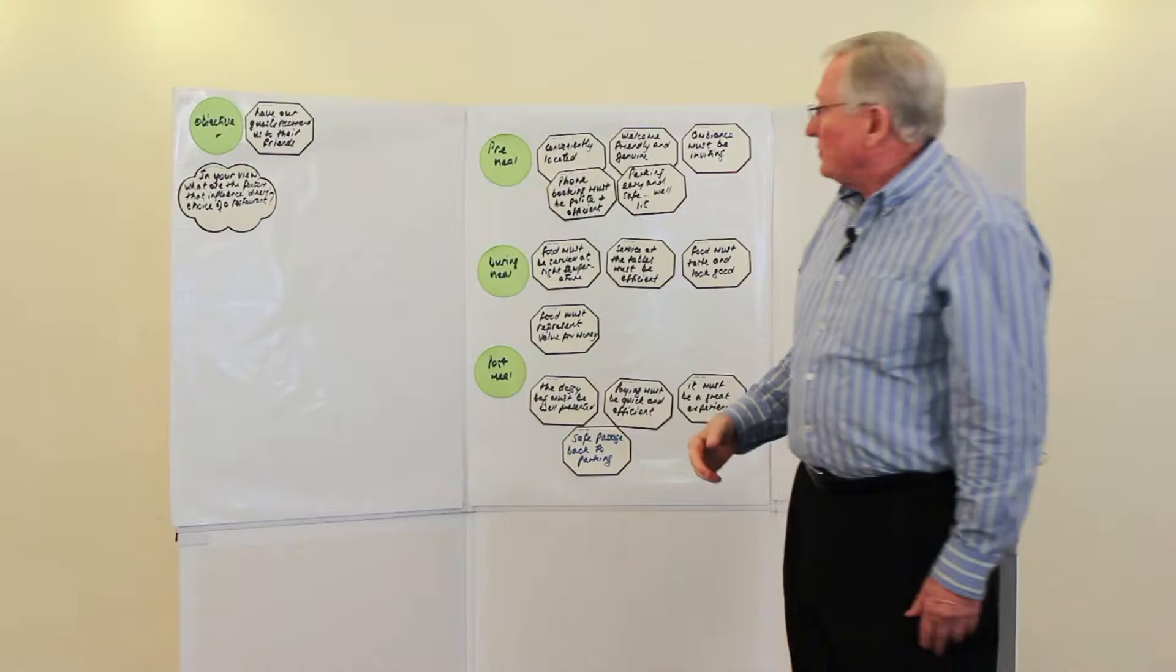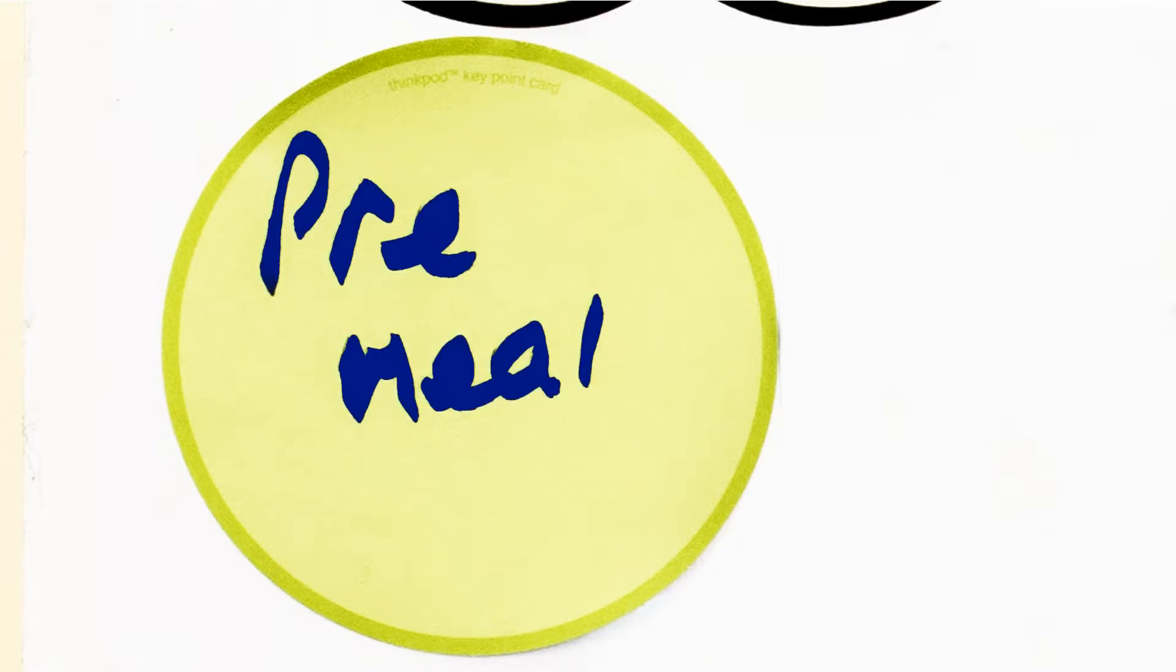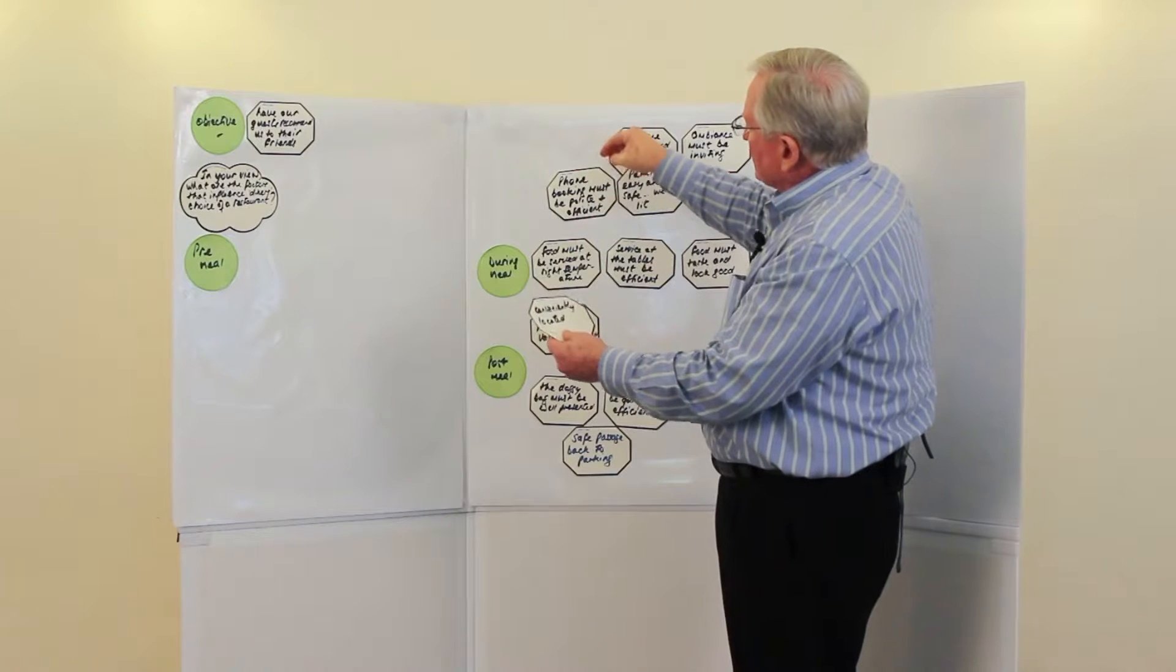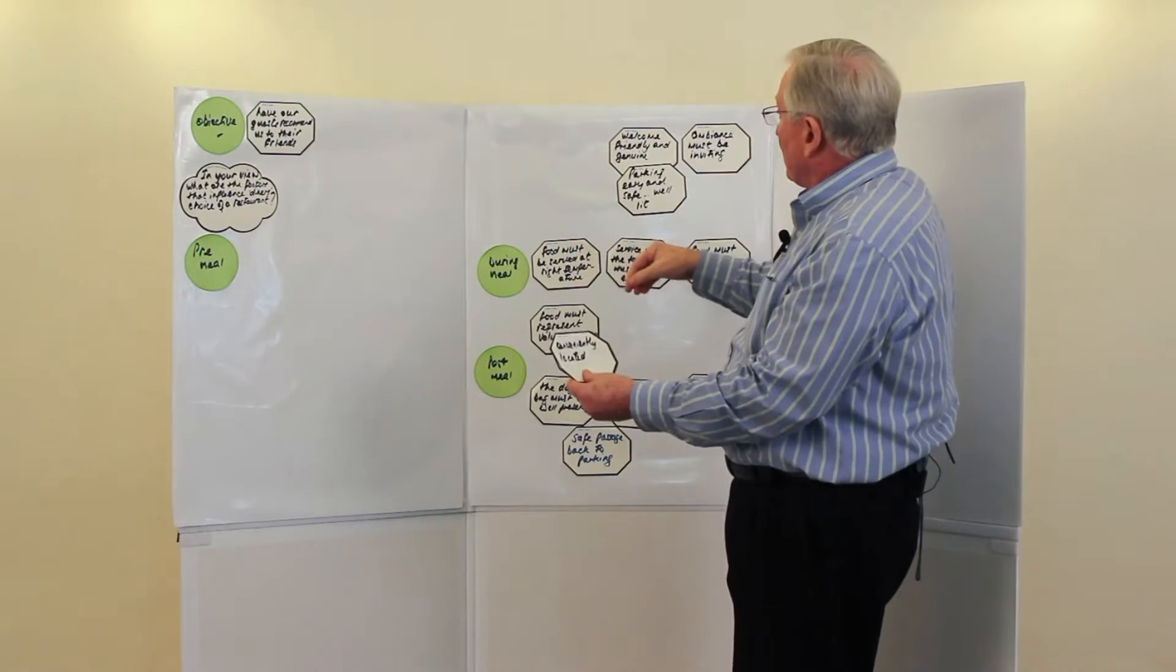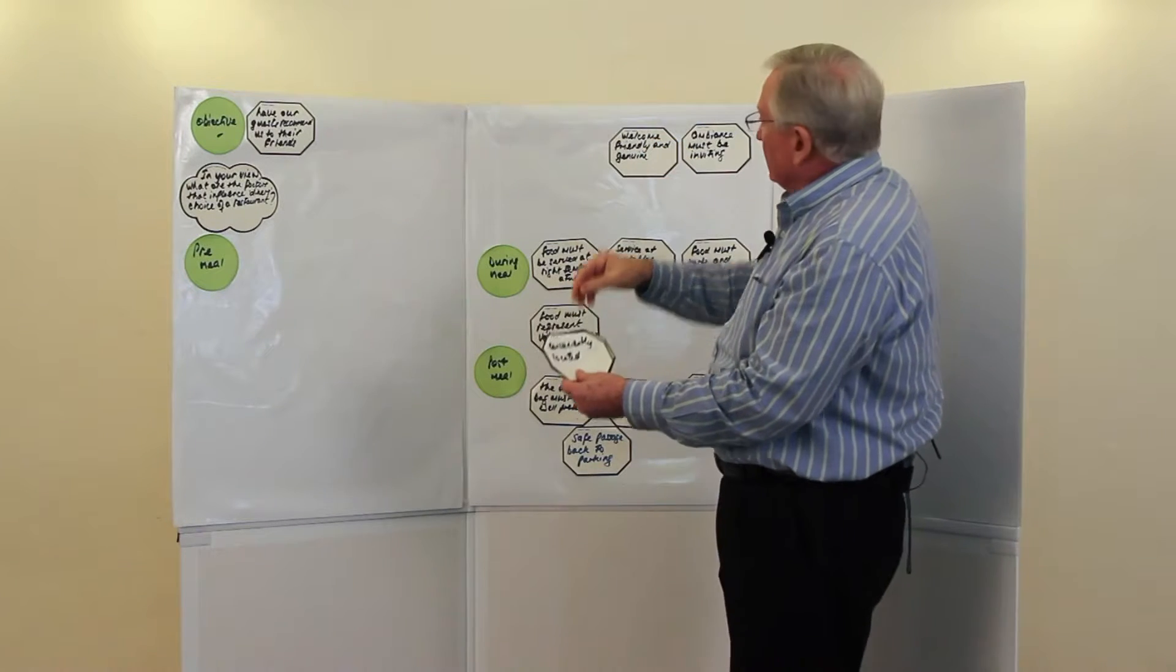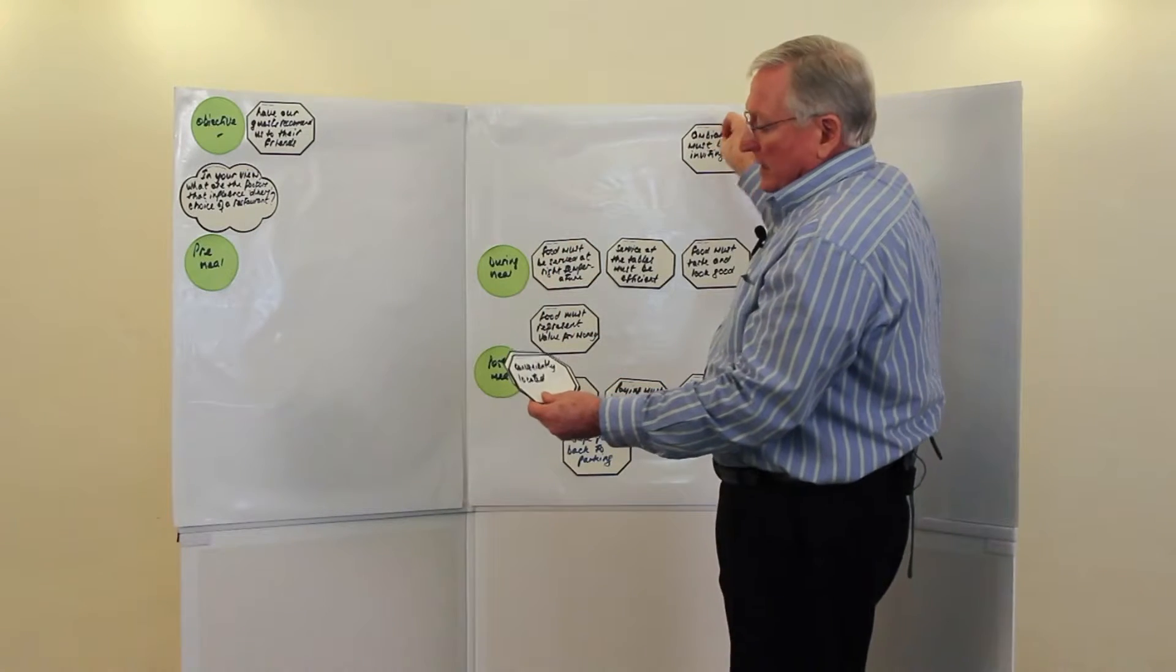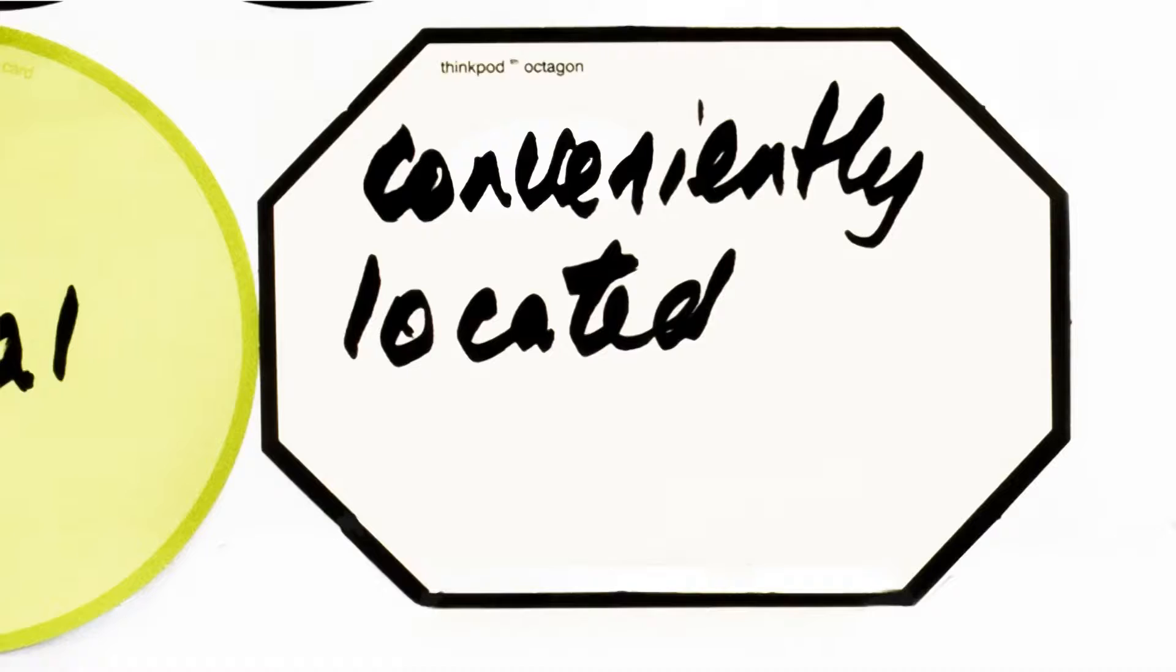Now what we might want to do is say, okay, let's rework these and work them into how they tell a story. So we're saying, first of all, is this a restaurant that I want to go to? Is it convenient for us? Is the phone booking efficient and done well? Then will I be able to park easily? Do they welcome me well? Is it friendly and genuine? And finally, for the pre-meal, is the ambiance inviting?